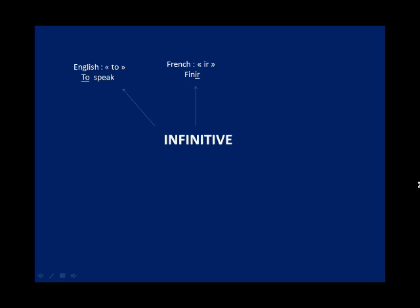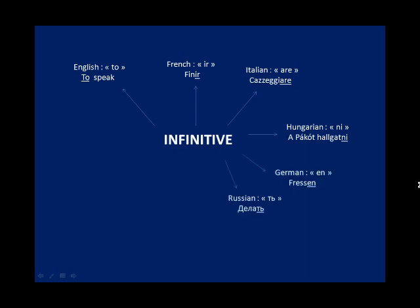French uses '-ir' (finir), Italian uses '-are' (andare), Hungarian uses '-ni' (például: hallgatni), German uses '-n' (fressin), Russian uses '-t' (delat'), Korean uses '-da' (mokda), Norwegian uses '-o' (snakke), and Japanese uses any verb with a '-u' ending, like 'kaku'. As you see, many languages have this.